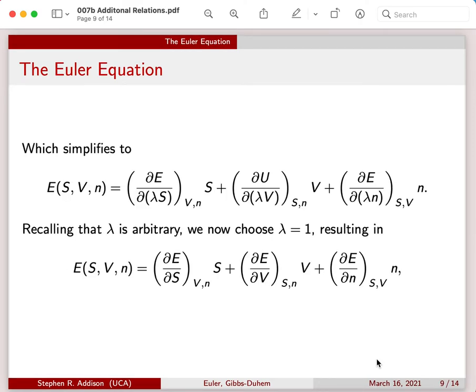We can simplify that expression, and lambda is always arbitrary. I can choose it to be anything that I want to, so I'm going to choose lambda to be equal to one, and that gives us a very simple expression.